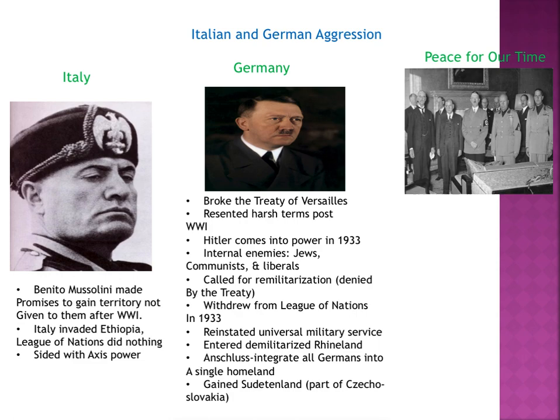Hitler came into power in 1933 legally, becoming Chancellor of Germany. For him, the internal enemies were the Jews, the Communists, and the Liberals. He said that in order to strengthen Germany we have to remilitarize — even though it wasn't allowed by the treaty, we need to do it if we want to be a force to be reckoned with. He called for remilitarization, which was denied by the treaty, but he did it anyway.